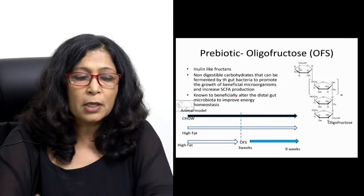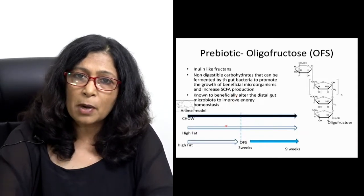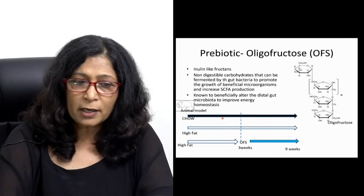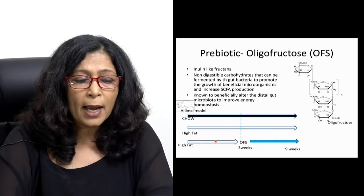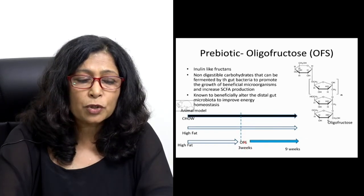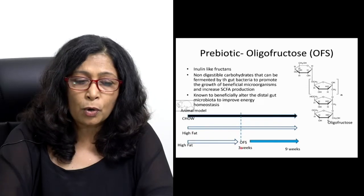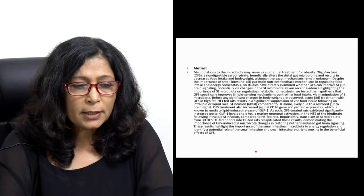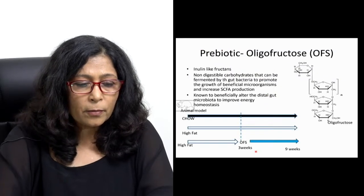These are animal studies in mouse models with three groups: one was high-fat, one was normal chow diet which acted as a control, and the third group initially received high-fat then were switched over to oligofructose or OFS diet.